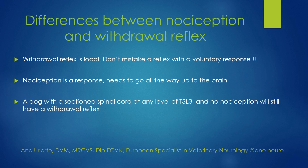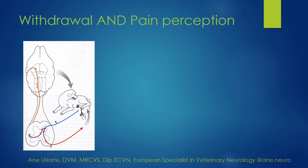Very important concept: we could have a dog that has a completely sectioned spinal cord at the level of T3-L3, and he could have absolutely no nociception — he could not feel the limbs at all — but he would still have a withdrawal reflex. Why? Because the L4-S1 lumbar plexus is intact.